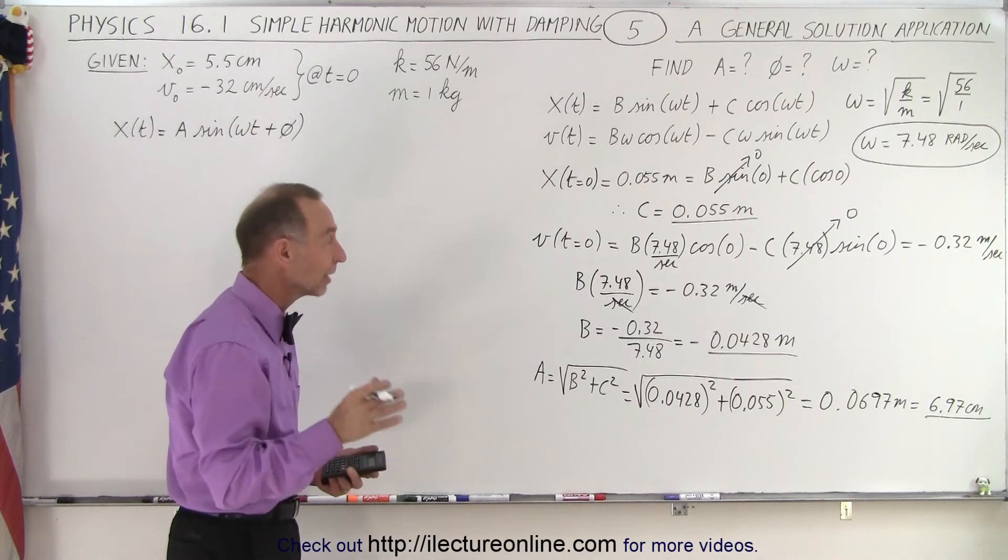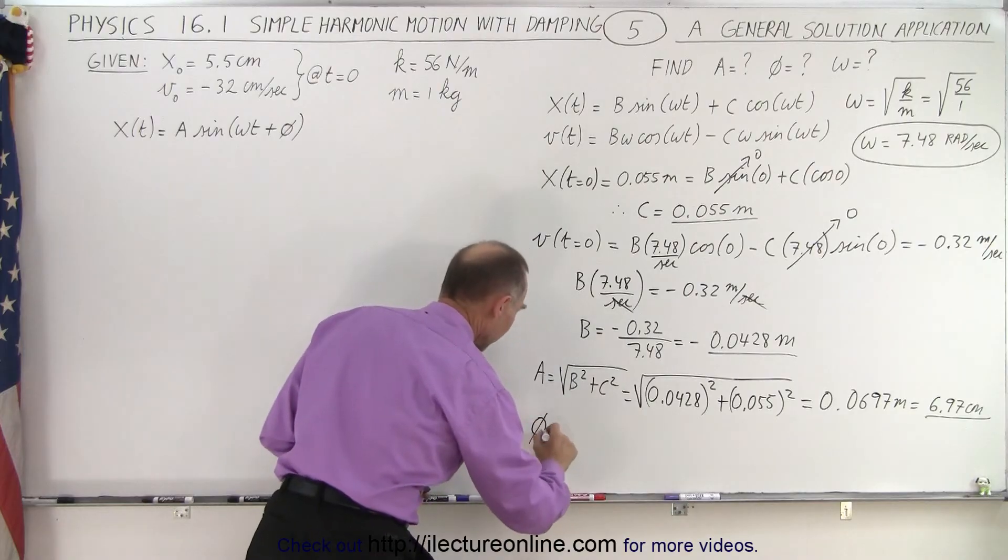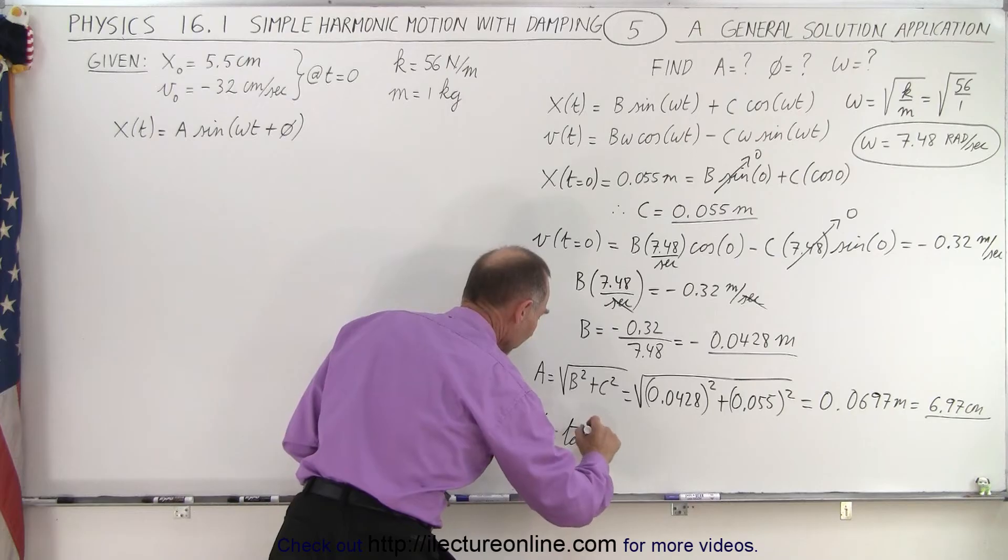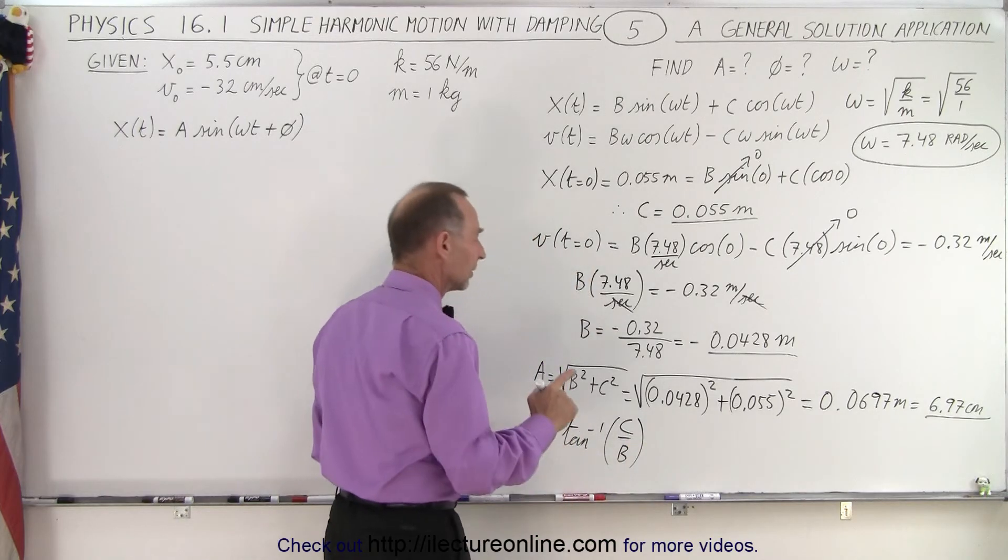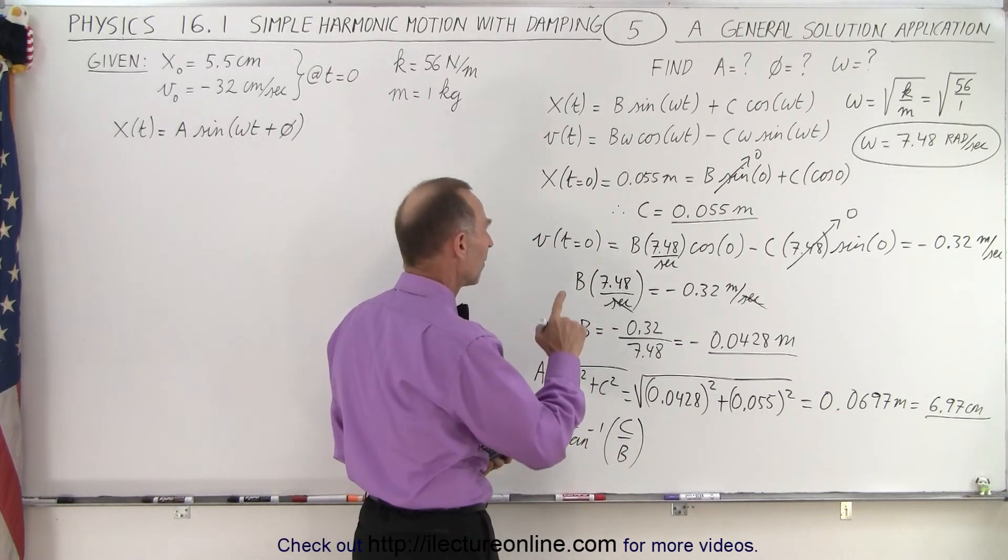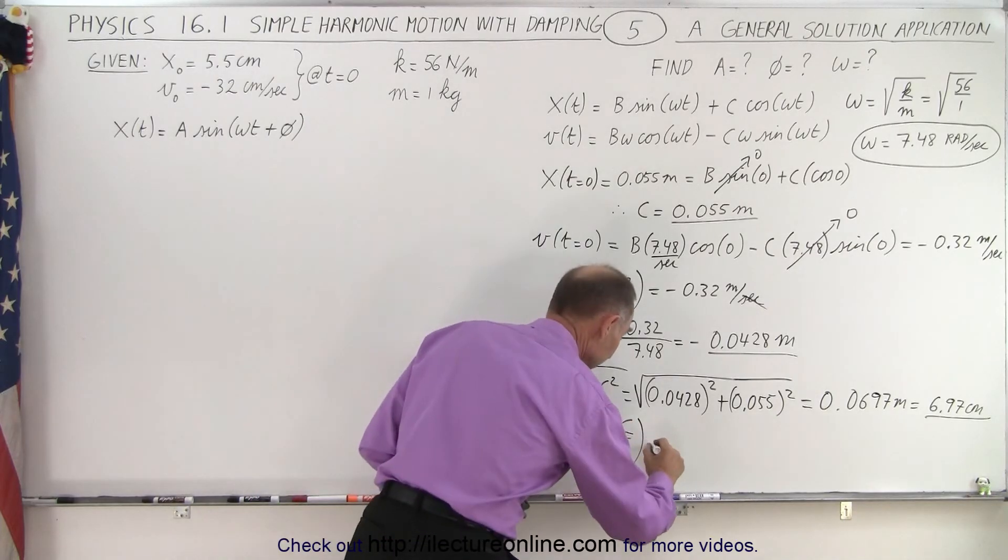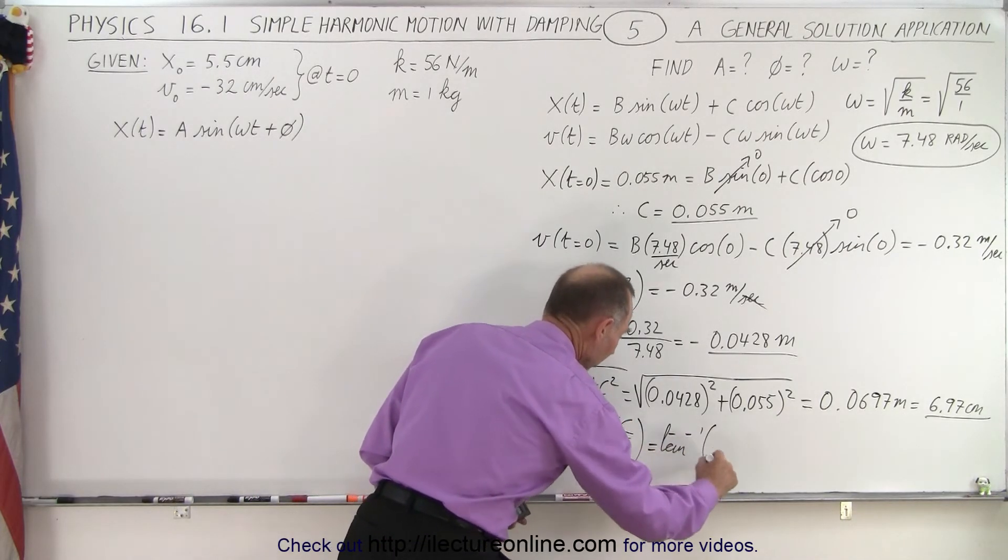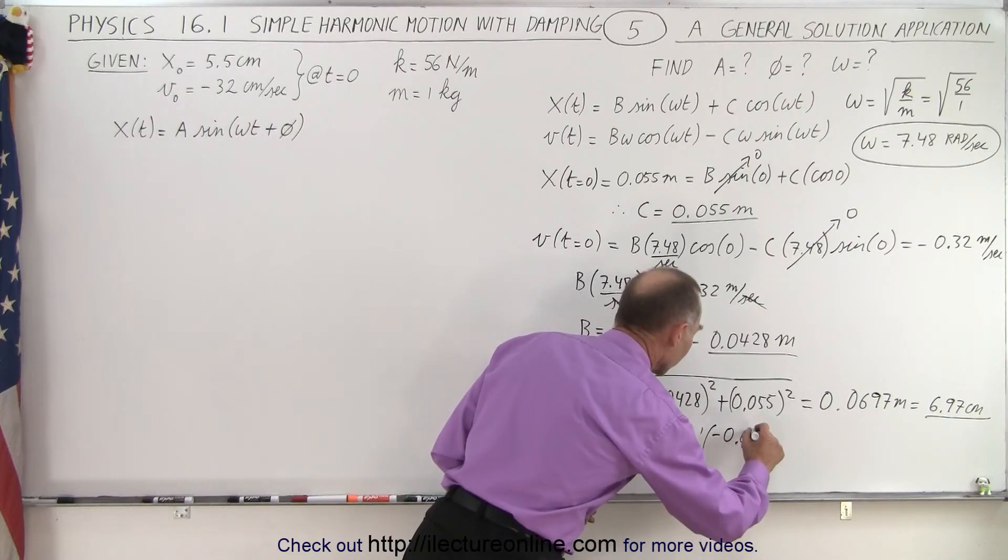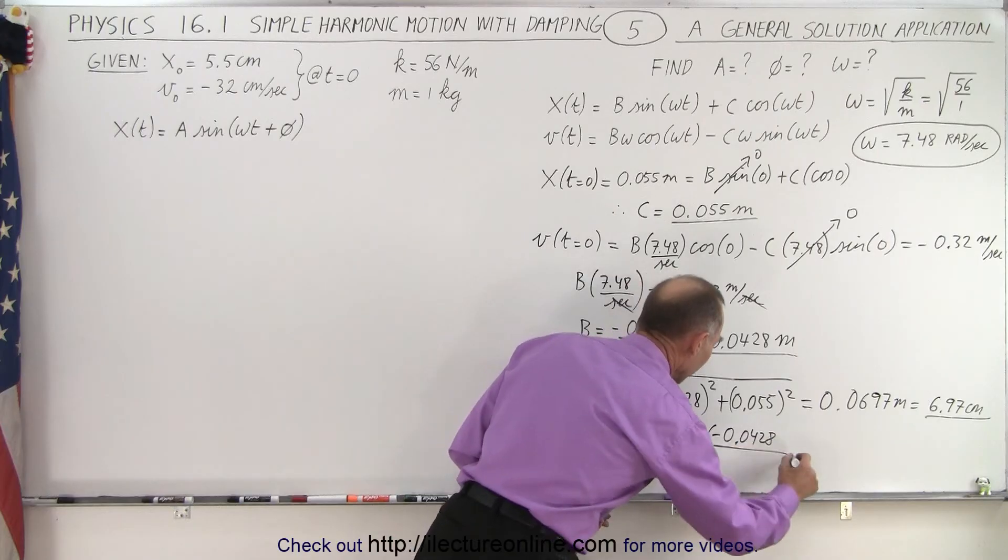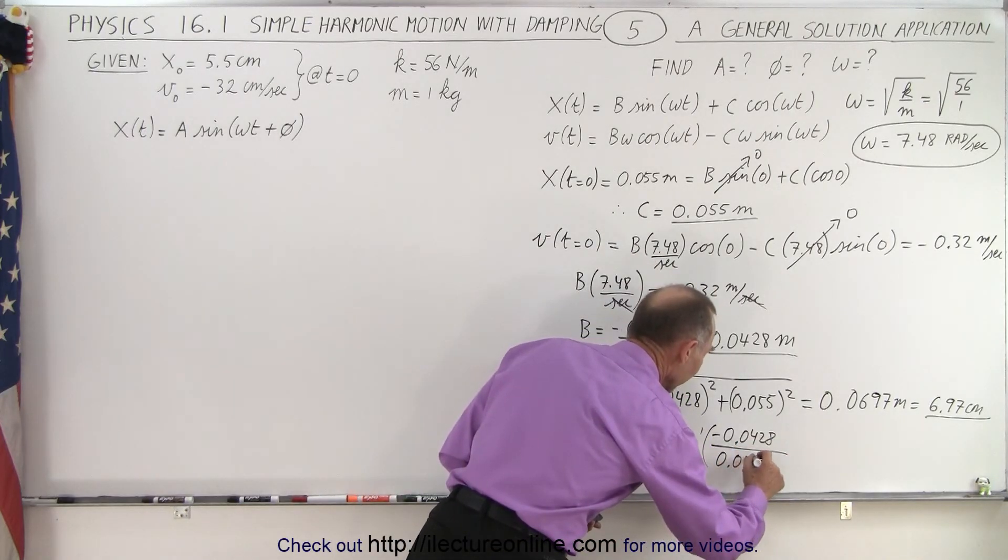Now the phase angle phi is equal to the inverse tangent of C over B. Now, C is positive, B is negative, the signs do have to be taken into account here. So this is equal to the inverse tangent of negative 0.0428 divided by positive 0.055.